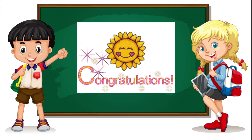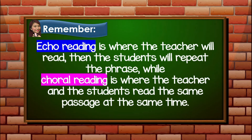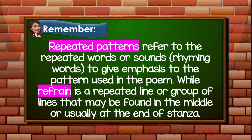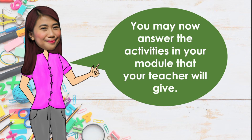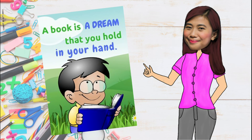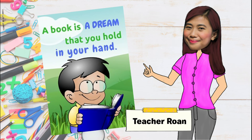Congratulations kids! You really did well! Always remember: echo reading is where the teacher will read, then the students will repeat the phrase. While choral reading is where the teacher and the students read the same passage at the same time. Repeated patterns refer to the repeated words, sounds, or rhyming words to give emphasis to the pattern used in the poem. While refrain is a repeated line or group of lines found in the middle or usually at the end of a stanza. I hope you learned well today! You may now answer the activities in your module. I am Teacher Roan, and here's our quote of the day: 'A book is a dream that you hold in your hand.' Till our next lesson kids, goodbye!